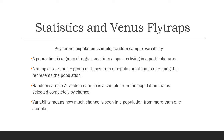Population is a group of organisms from a species that lives in a particular area. A sample is a smaller group of things from a population that represents that population. A random sample is a sample from the population selected by chance. Variability means how much change is seen in a population when you take more than one sample.